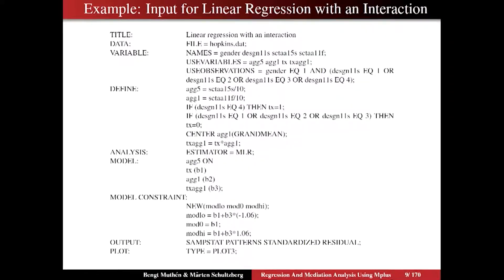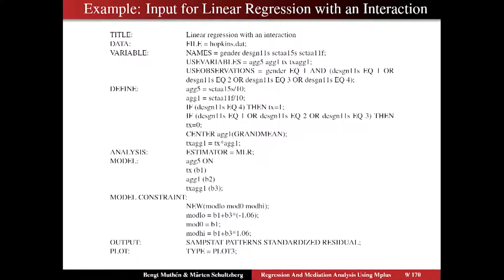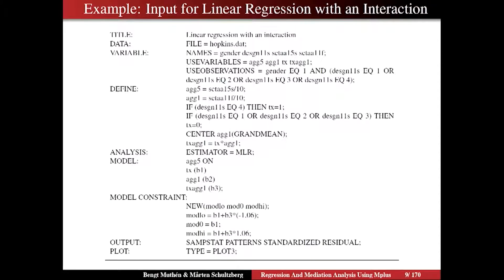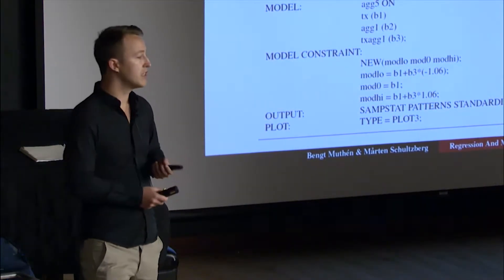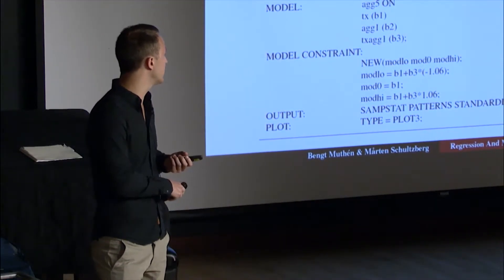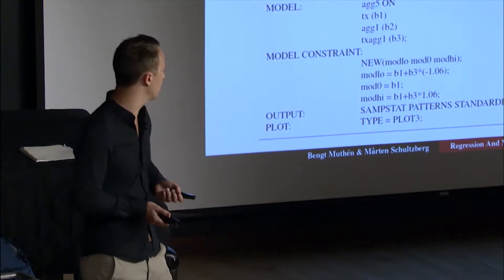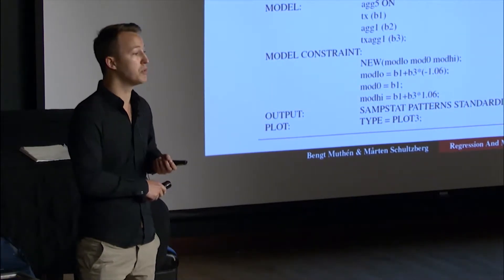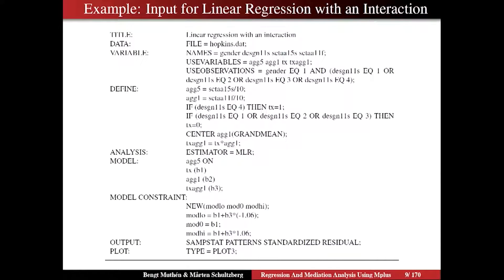We create the tx variable — the treatment variable — using an if-then statement. If the design11 variable equals 4, then the treatment variable equals 1. If design11 equals 1, 2, or 3, then the treatment variable equals 0. So design11 is not exactly a treatment variable; we have to redefine it as a binary treatment variable. Then we use the CENTER option to center ag1 using the grand mean — you can read this as: center the variable ag1 with the grand mean. We do this to make the interaction interpretation easier.